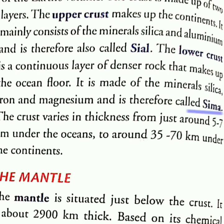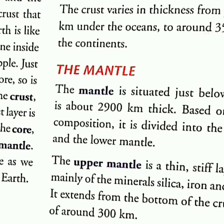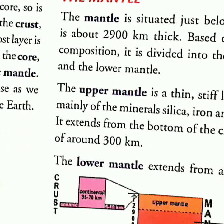Sima is made up of minerals silica, iron, and magnesium. The thickness of the upper crust that makes up the continent is around 35 to 70 kilometers, while the thickness of the lower crust that makes up the oceans is around 5 to 7 kilometers. The next layer of the earth is the mantle — the layer just below the crust.